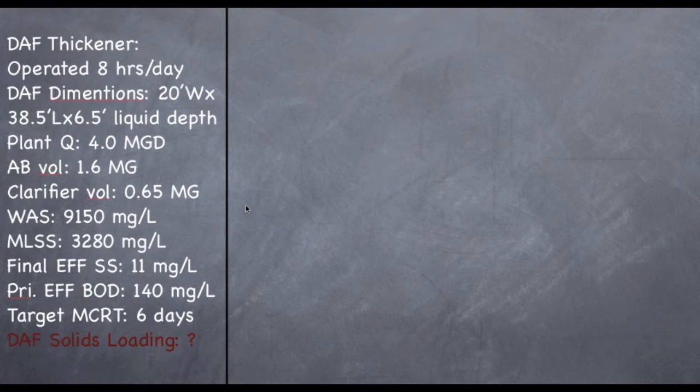Hopefully you paused it and took as long as you needed to look at the given data. And I hope what you noticed is that this problem is no more difficult than a grade 3 problem. If you'll notice what's missing from the data to do this formula, we're missing a wasting rate. How much are we wasting per day? So, all we have to do is find the wasting rate, which is a grade 3 problem, and then plug that into a DAF solids loading, which is another grade 3 problem. So, essentially this is two grade 3 problems in one.